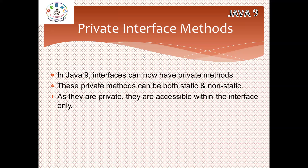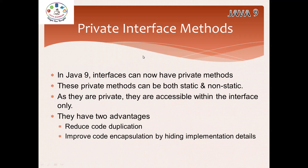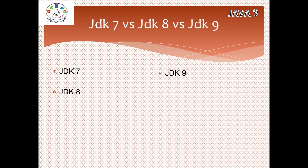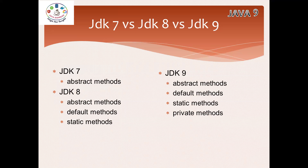we can access it within the interface only. What is the advantage of using private methods? We can reduce code duplication, and code encapsulation will be improved by hiding implementation details. In a high-level overview: JDK 7 has abstract methods; JDK 8 added default and static methods; JDK 9 newly added private methods. This is the concept of private methods in interfaces. Let me start the coding part.